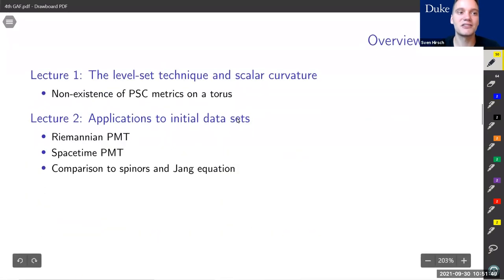In my second lecture, we're going to go to the non-compact setting, studying asymptotically flat manifolds and initial data sets. This is going to include proofs of the Riemannian and the spacetime positive mass theorem, which we're going to compare to other proofs of this result.